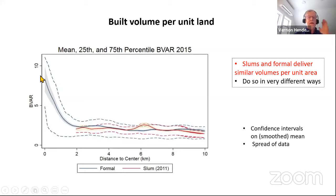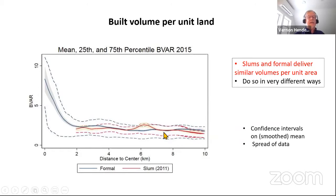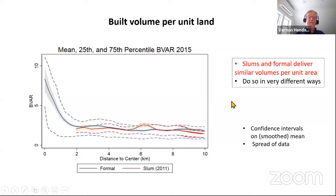This is built volume per unit land — a snapshot. In the formal sector there's huge volume at the city center that declines outward. An interesting takeaway: slums and the formal sector actually provide roughly the same volume per unit of land. They just do it in very different ways — slums are crowded and low quality, while the formal sector has more open space and much higher buildings.